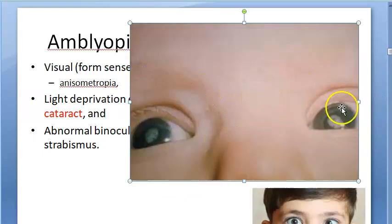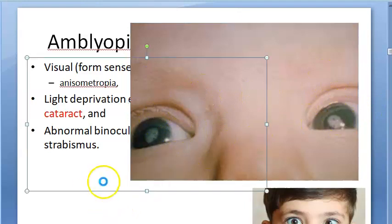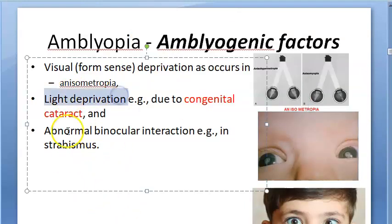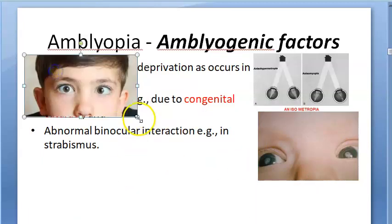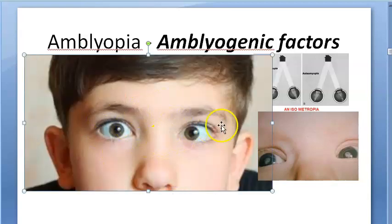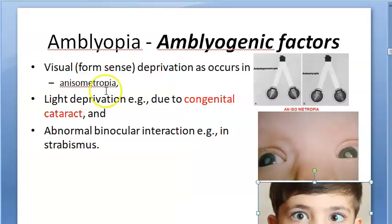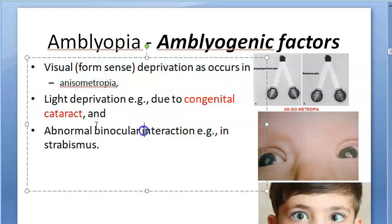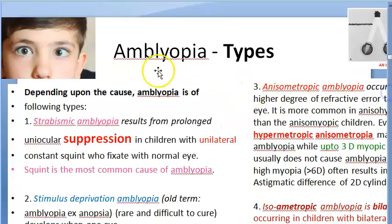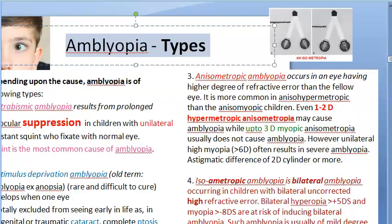Light deprivation because of cataract means light itself is not reaching your retina. Another amblyogenic factor is abnormal binocular interaction — that is, strabismus or squint. So the amblyogenic factors are: light itself not reaching, visual deprivation happening, or abnormal binocular interaction as in strabismus.